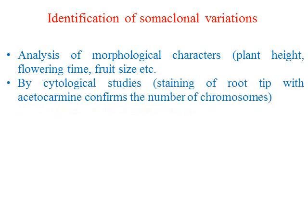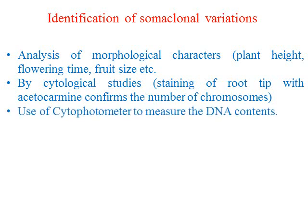Next, you can go for cytological studies. You have to stain the new plant cells with aceto-carmine. After staining, count the number of chromosomes with the help of a microscope. If there is a chromosome number change compared to the mother plant, then of course you can say that it is showing somaclonal variation.